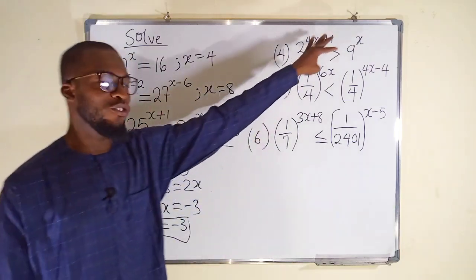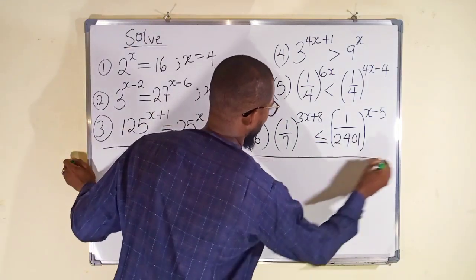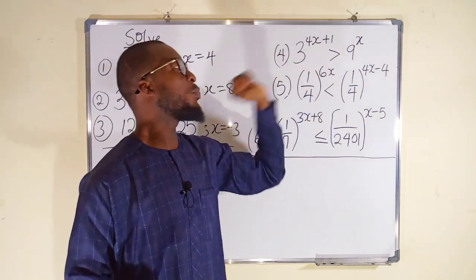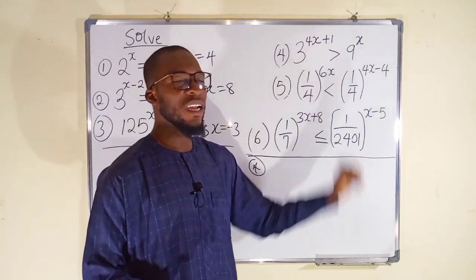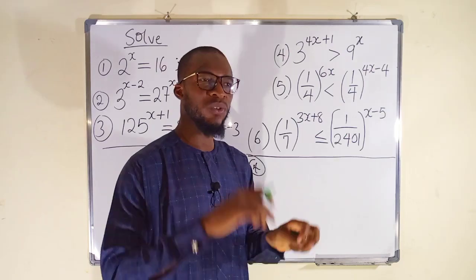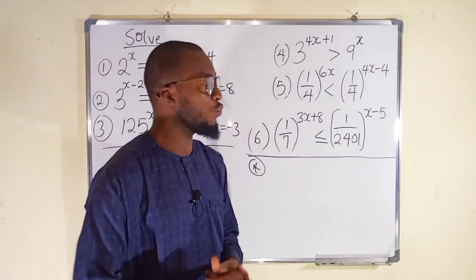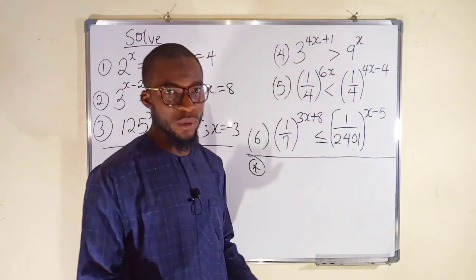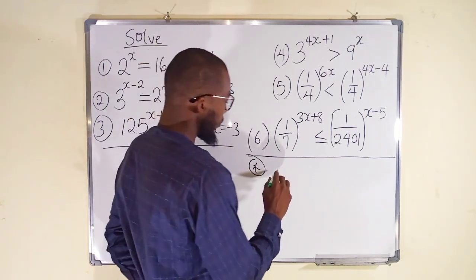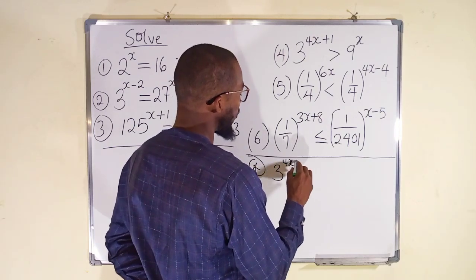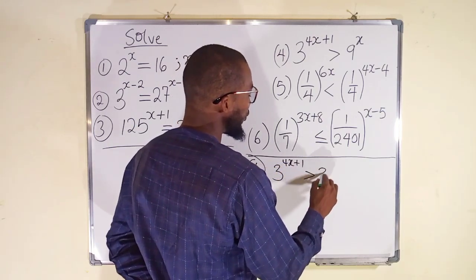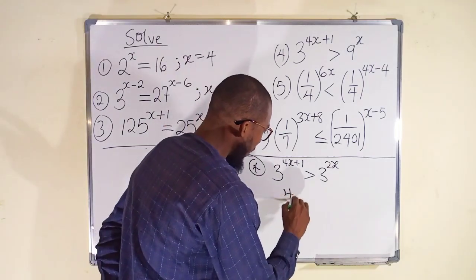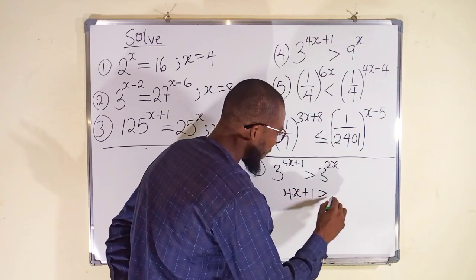Now let us move on to the inequalities. Number 4: we have 3 raised to the power of (4x plus 1) and that is greater than 9 to the power of x. We want to find the value of x that makes this statement true. We can write 9 as 3^2, since 3 squared equals 9. So to the left we have 3^(4x+1) greater than 3^(2x). Since we have common bases, 4x plus 1 must be greater than 2x.